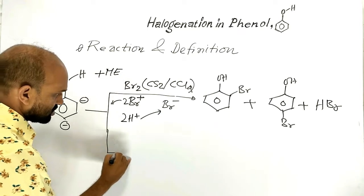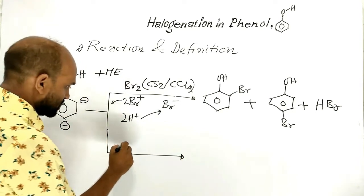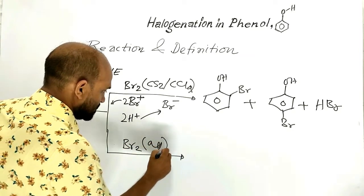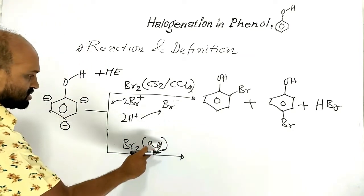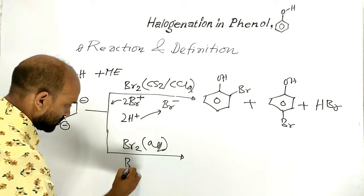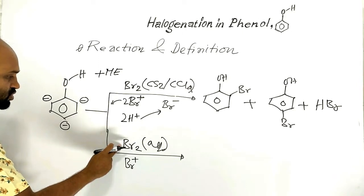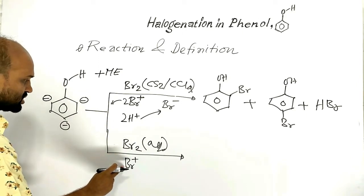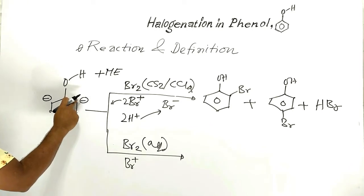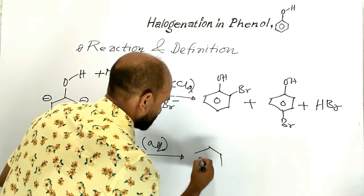When phenol is treated with bromine solution in water — aqua means water — the bromine cation produced from the bromine molecule will attack the ortho positions and para position to form a trisubstituted compound.